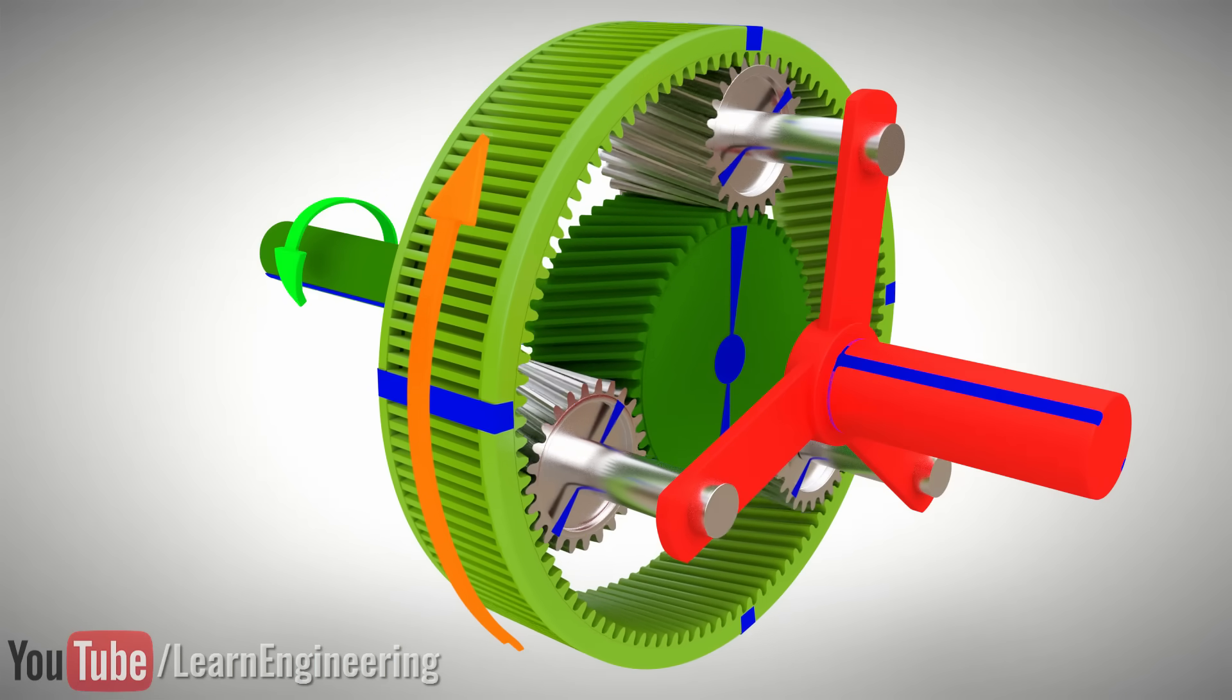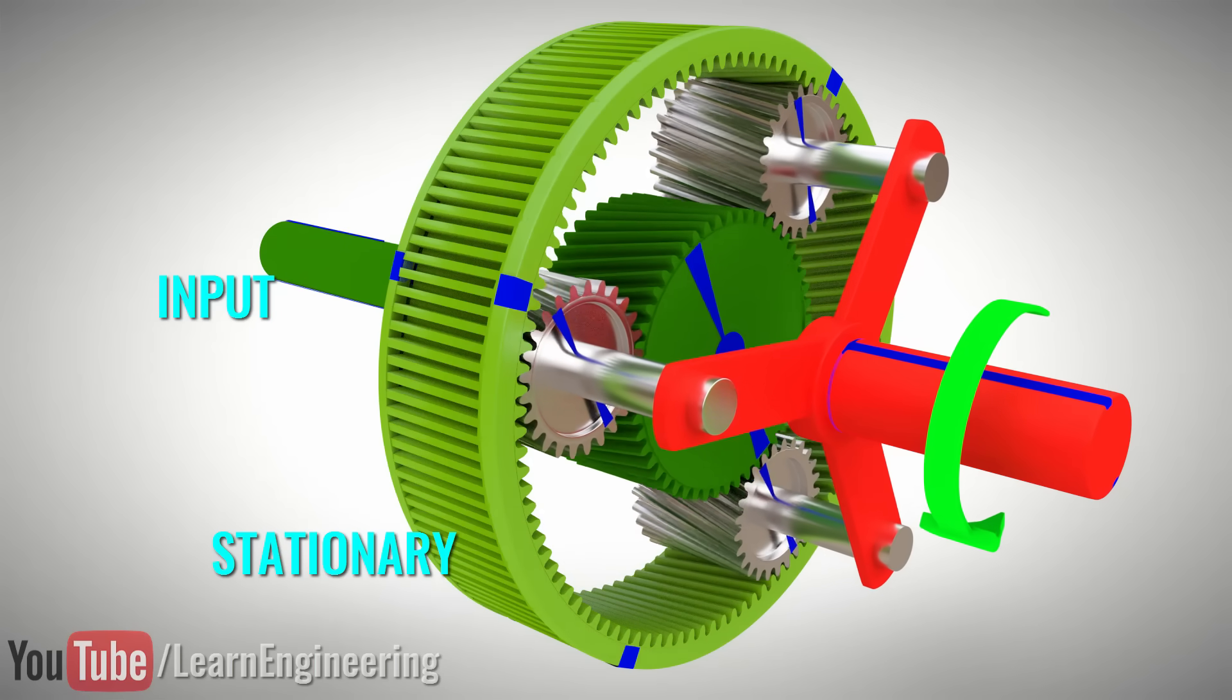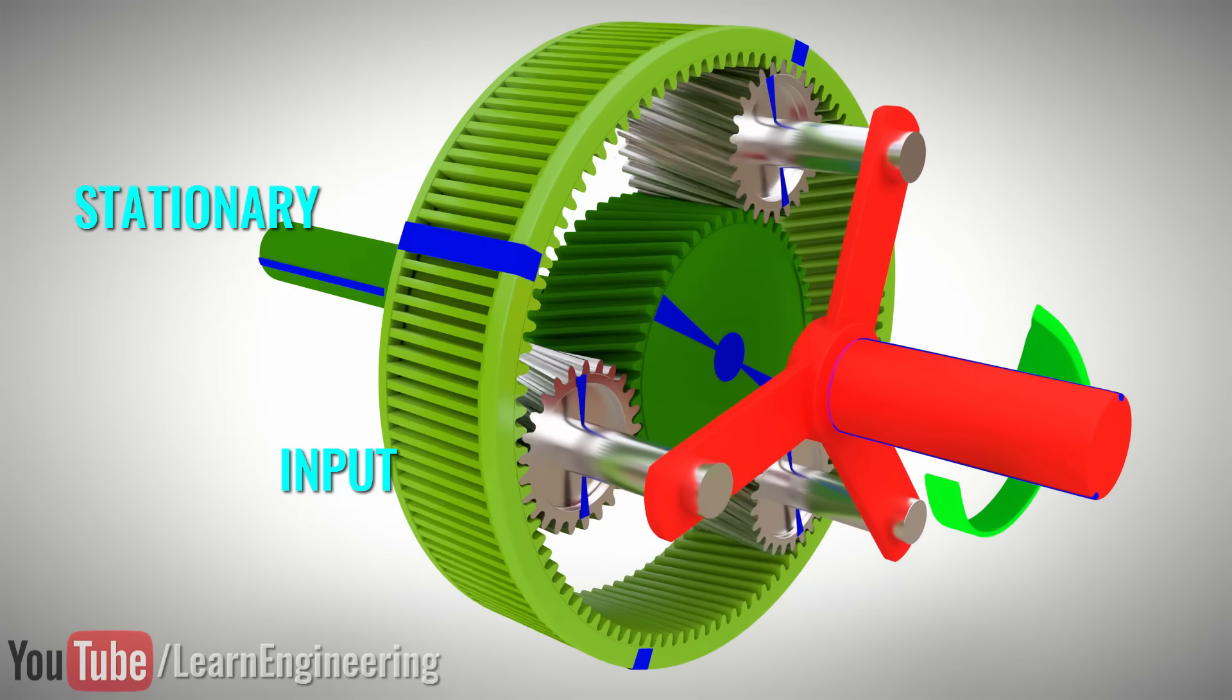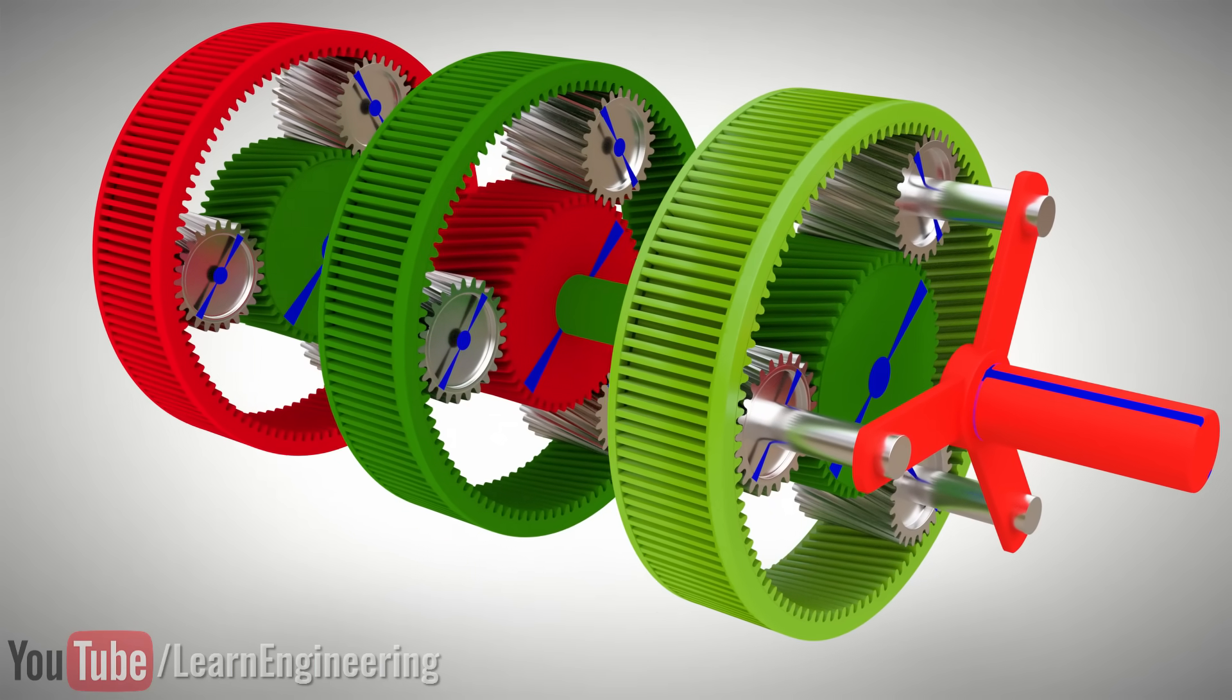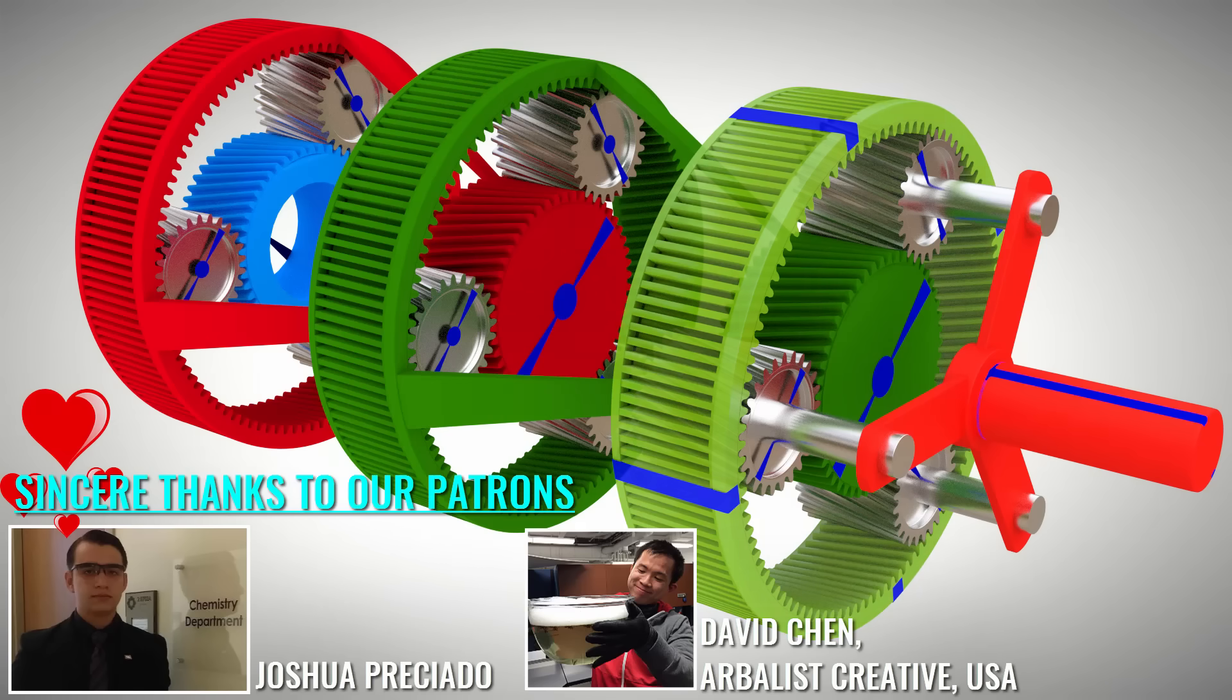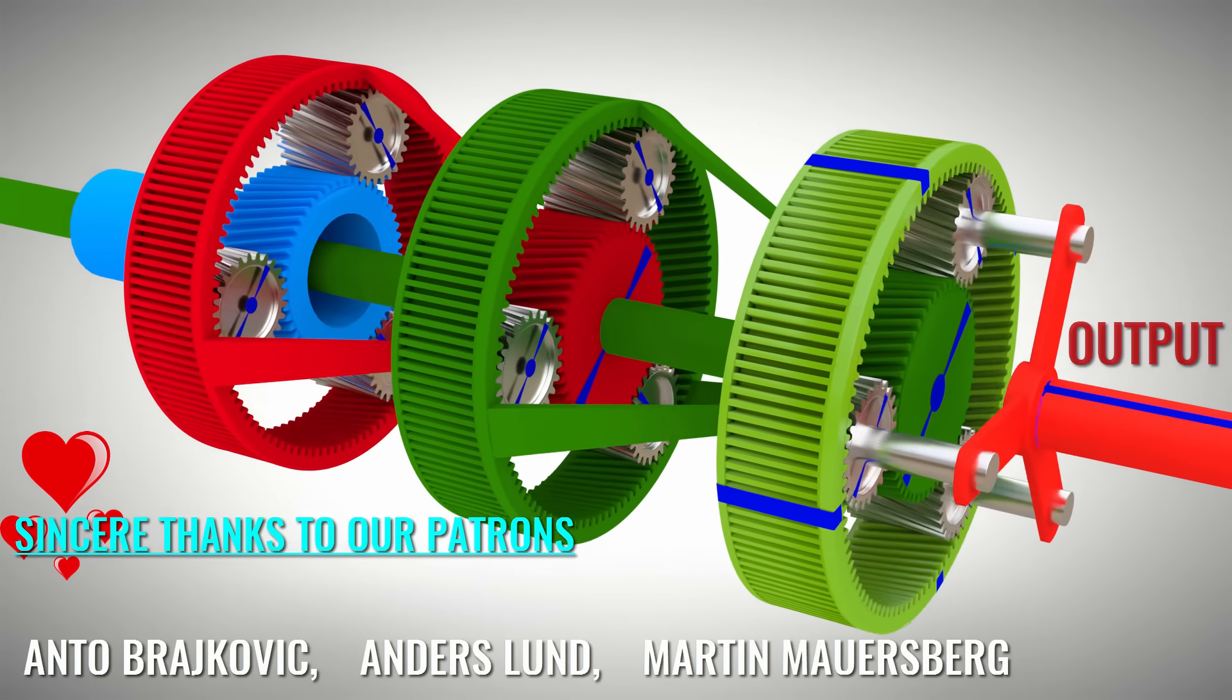Here, you can note that in order to achieve different speeds, the input must be given to different parts of the planetary gear set. This is practically difficult in an actual mechanism. In an automatic transmission, to achieve this, three planetary gear sets are connected in series as shown with coaxial shafts. To understand how this arrangement effectively transfers the input rotation to different parts of the planetary gear set, watch our video on automatic transmission.